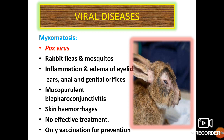Myxomatosis is a viral disease caused by poxvirus or myxomavirus, mainly transmitted by rabbit fleas and mosquitoes. Clinical signs include inflammation and edema of the eyelids, ears, anal and genital orifices. Mucopurulent blepharoconjunctivitis and skin hemorrhages can also be observed. There is no effective treatment and prevention is only by vaccination.